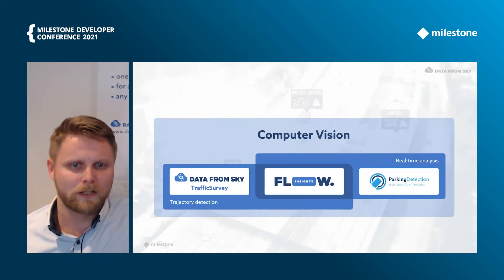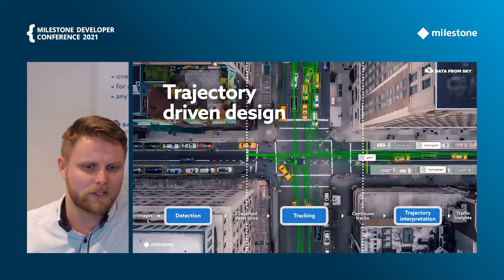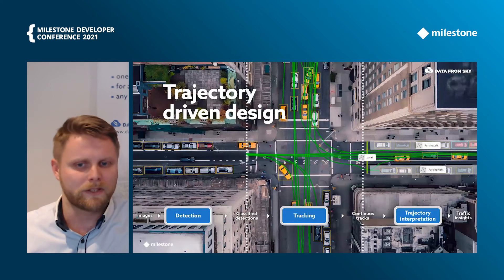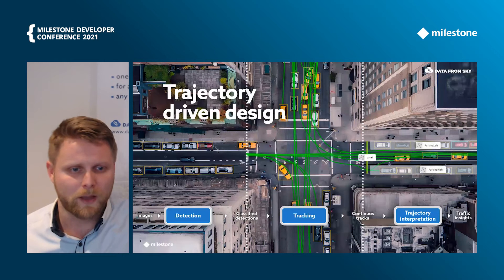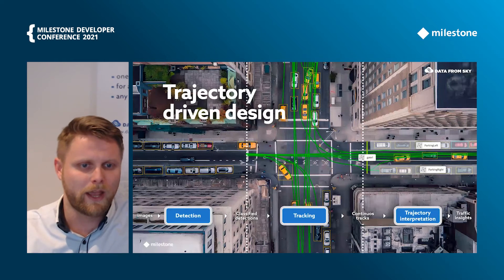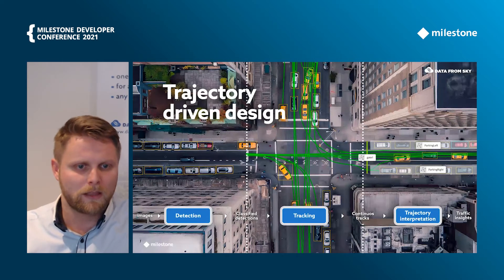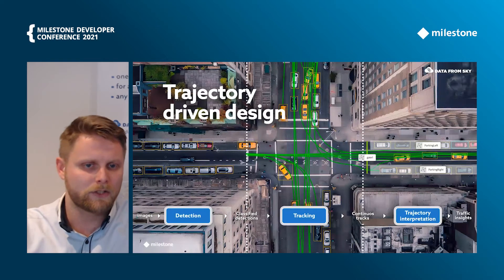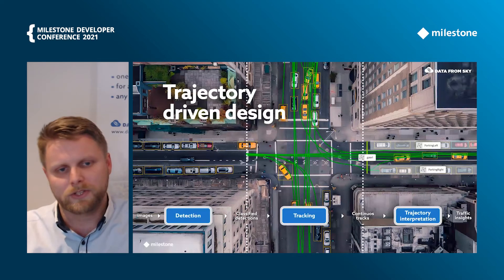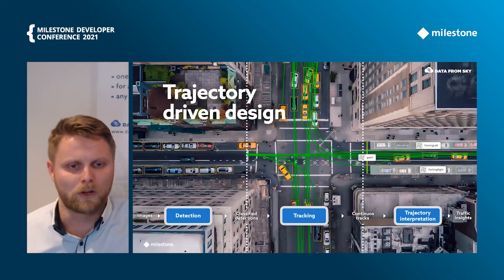Flow is built on a trajectory-driven design, which consists of three simple steps. The first step is detection. In the detection step we take an image and analyze what we see in it — we can say there is a red car, a silver car, a pedestrian, a cyclist, a bus, and so on.